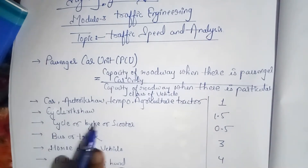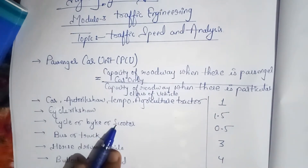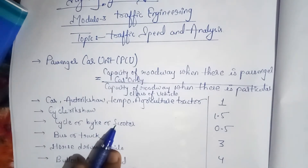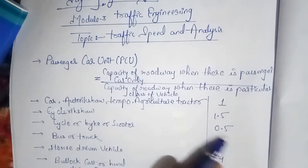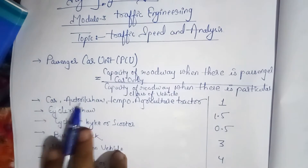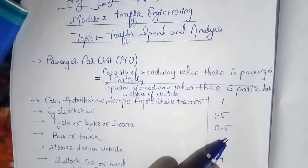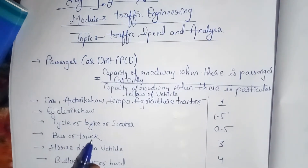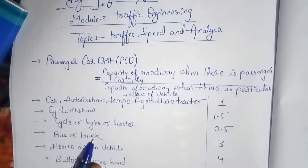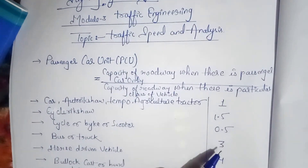Third, cycle, bike, and scooter — the PCU value for these is 1.5. Next, bus and truck — the PCU value for bus and truck is...